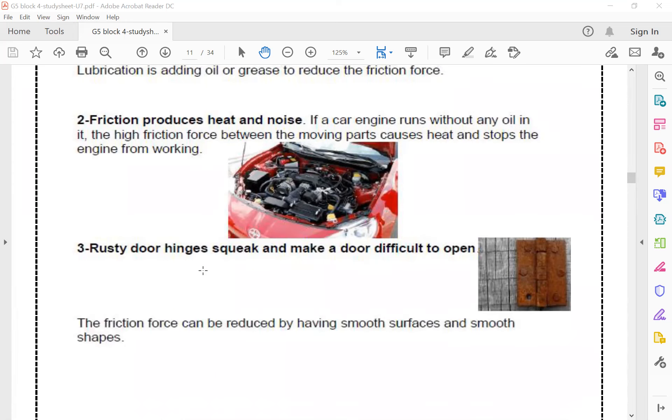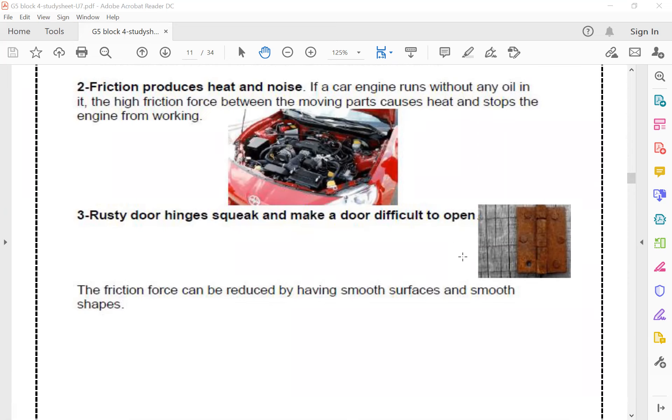Rusty door hinges squeak and make a door difficult to open. So the rust causes high friction. The friction force can be reduced by having smooth surfaces and smooth shapes.